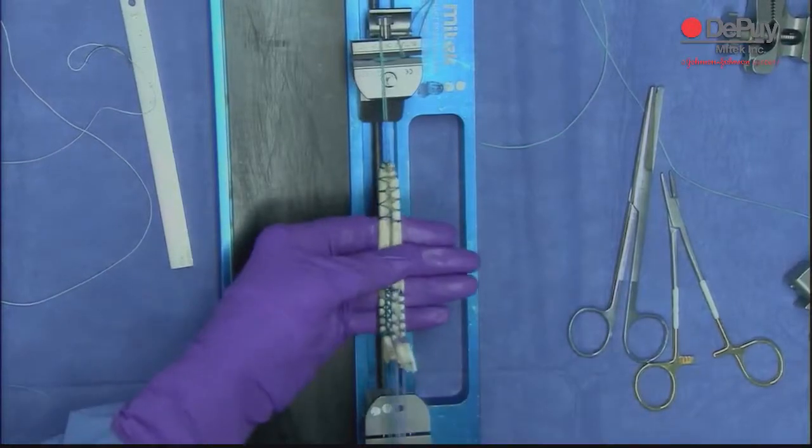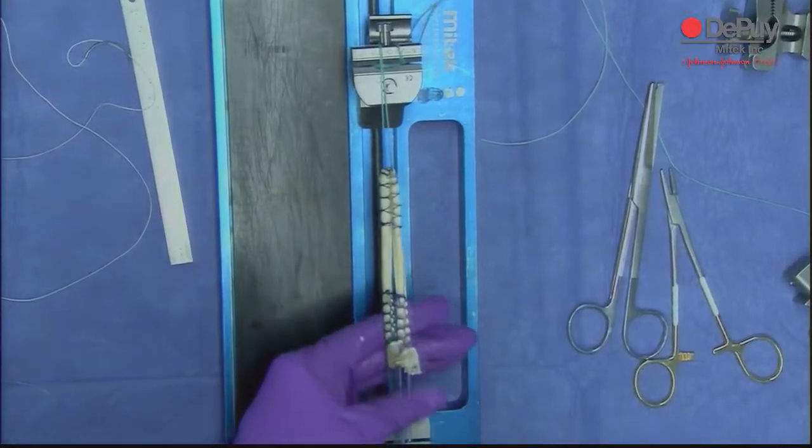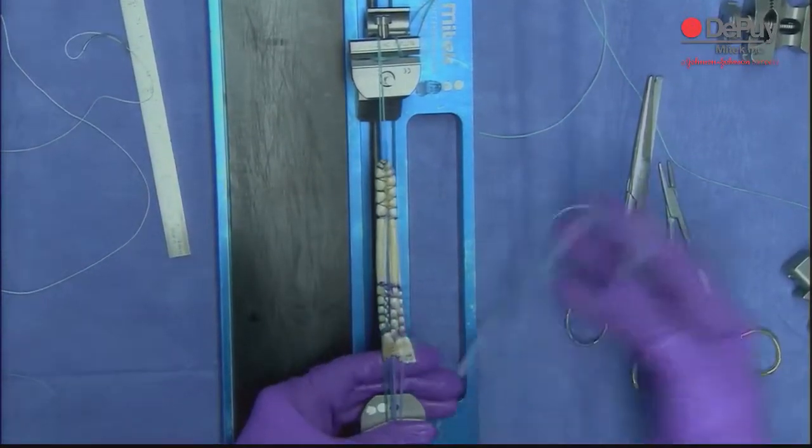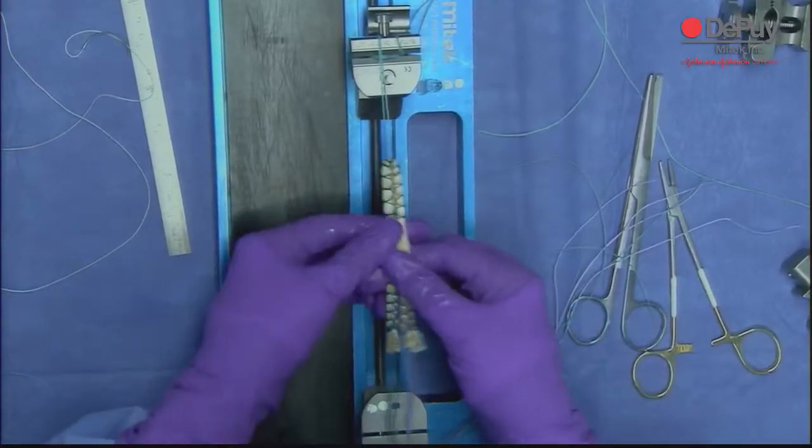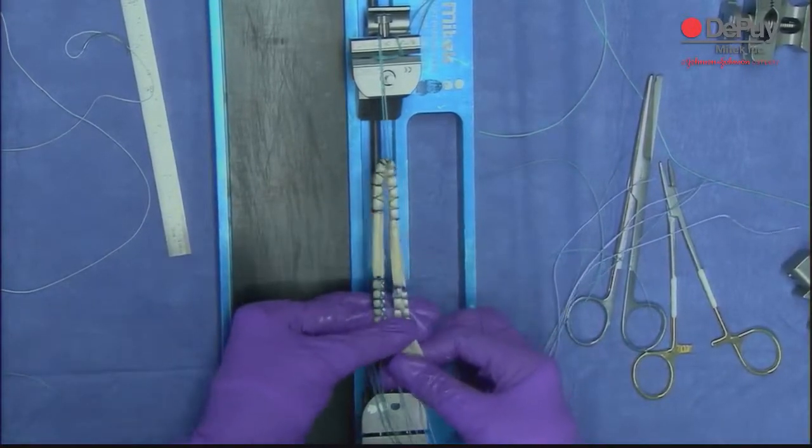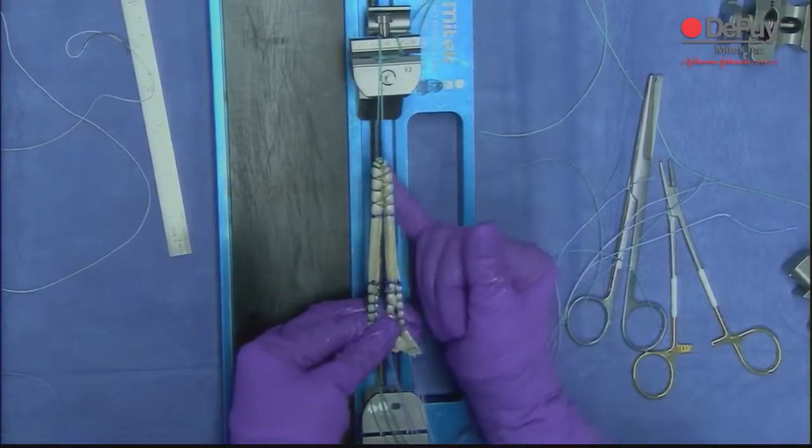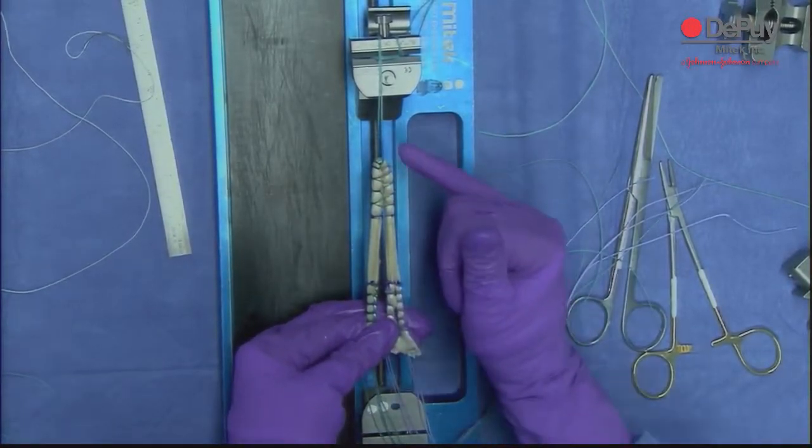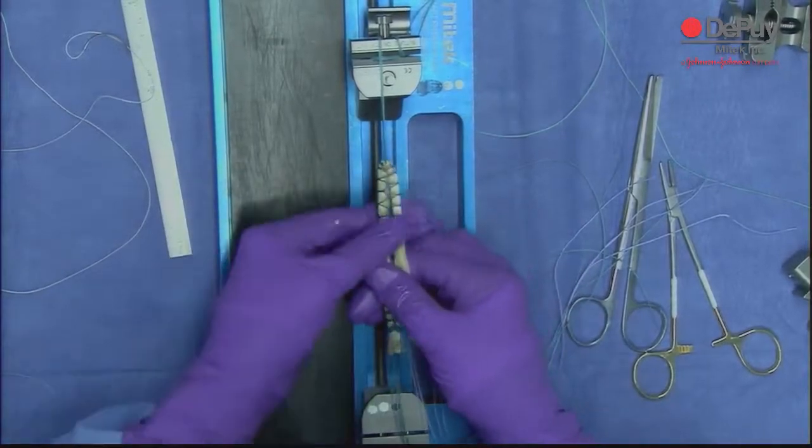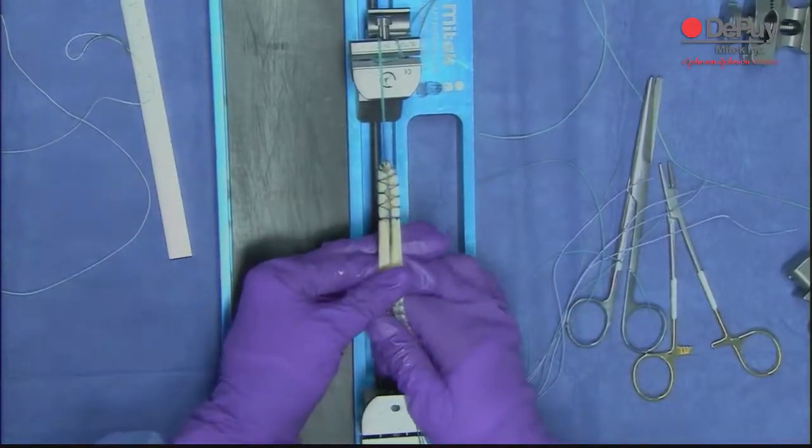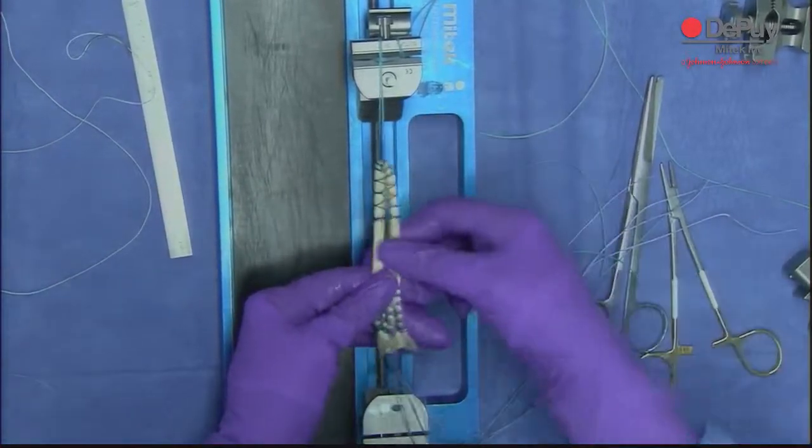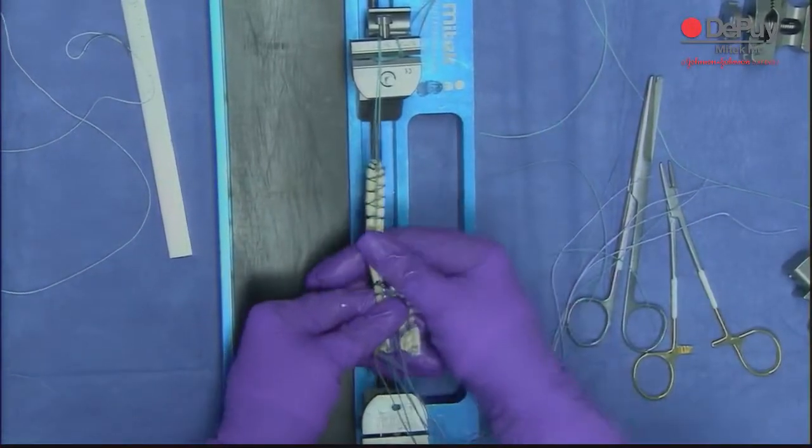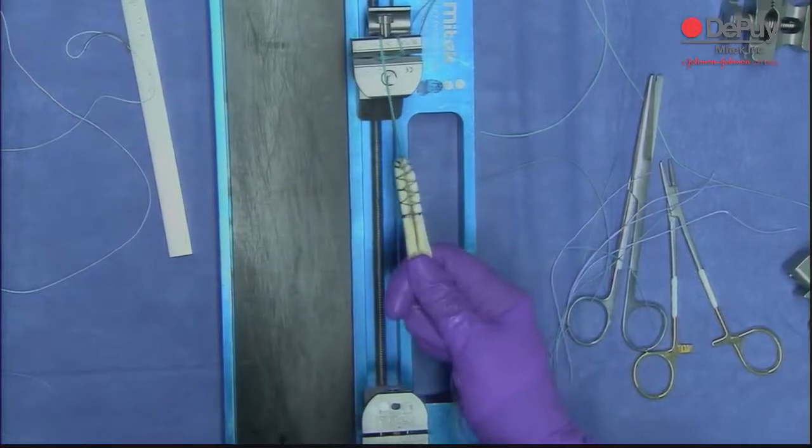So that's it, that's the modified finger trap suture technique. Down here, up here, down here I use number two ethibond, number two orthochord. Up here I used either zero or two-O, because you have to upsize the tunnel on the femoral side, so I use a smaller suture. All you're doing with this suture is making two bundles. That's it, we're done.